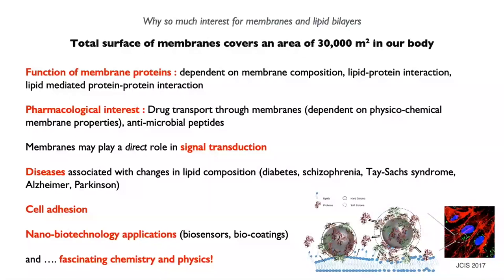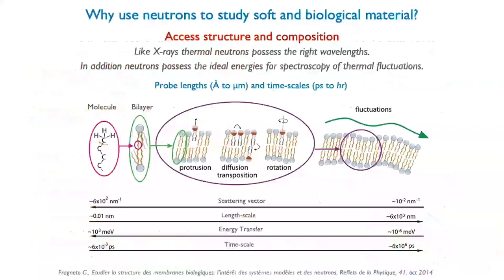Why is there so much interest in the study of cellular membranes and lipid bilayers in particular? First of all, they occupy a very large surface in our body. The function of membrane proteins is dependent on membrane composition, lipid-protein interactions, and lipid-mediated protein-protein interactions. There is large pharmacological interest since drug transport inside cells happens via interaction with a membrane. Membranes play a direct role in signal transduction, and many modern diseases like diabetes, Alzheimer's, and Parkinson's are associated with changes in lipid composition.